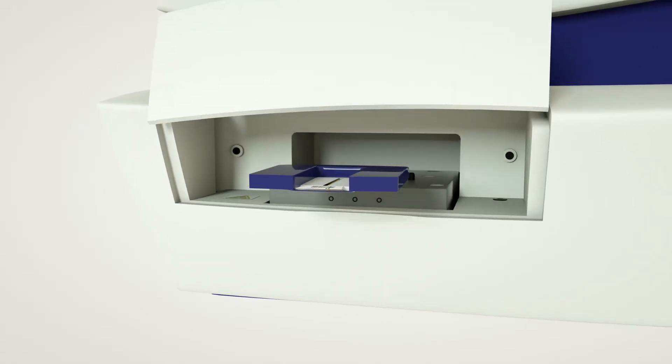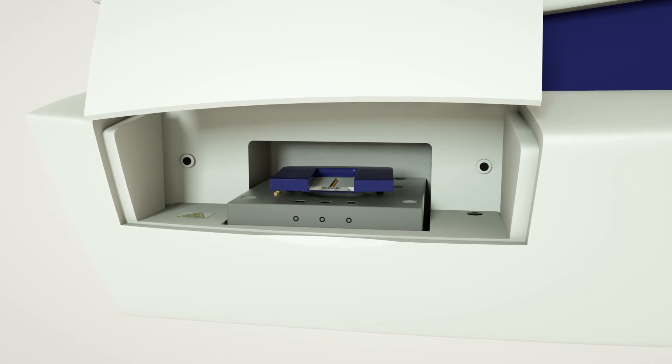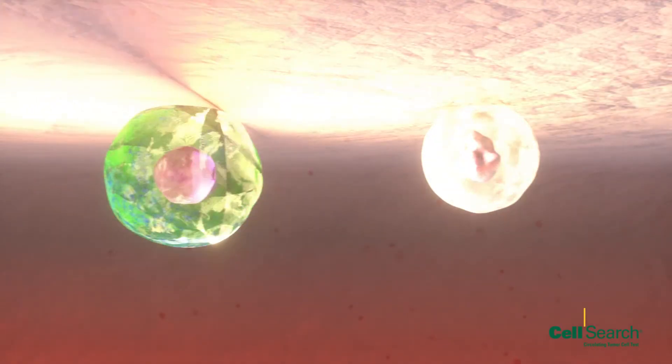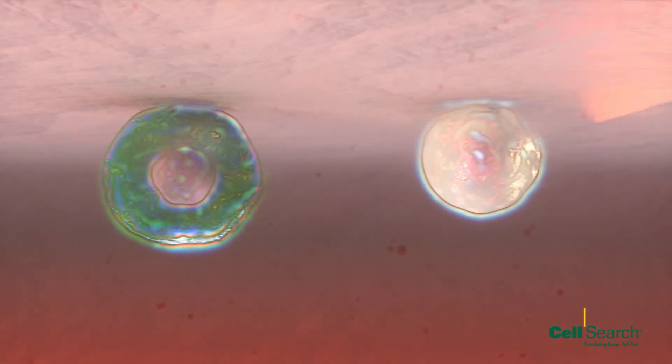The magnet is then inserted into the CellTracks Analyzer II. The cells, which are now held in place at a single focal depth, are automatically scanned by the fluorescent optical system of the CellTracks Analyzer II.